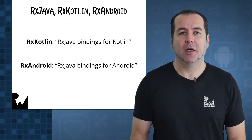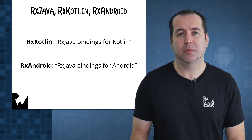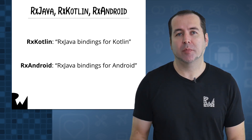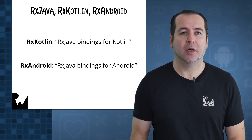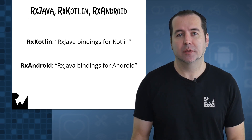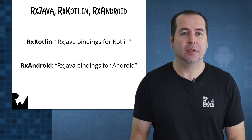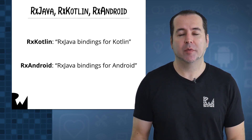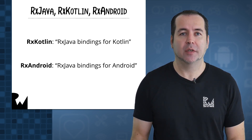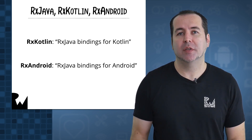Technically, RxKotlin consists of RxJava bindings for Kotlin. Thanks to the very tight interoperability between Kotlin and Java, you can call the RxJava library directly from Kotlin code. RxKotlin is a Kotlin layer on top of RxJava, adding lightweight extension functions to RxJava that make it even easier to work with from Kotlin.